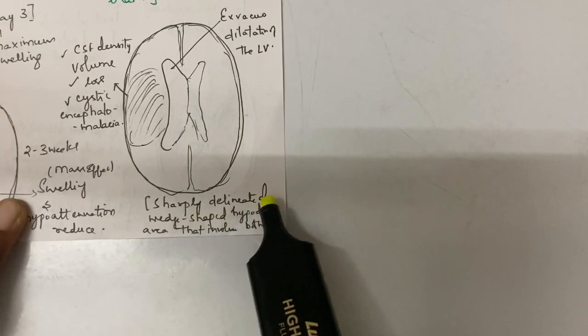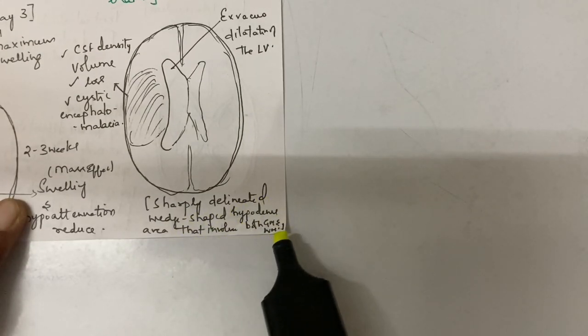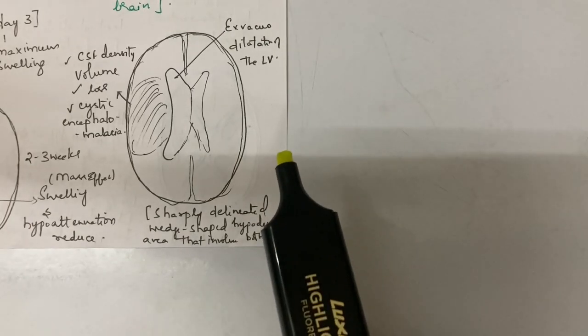There is a sharply delineated wedge-shaped hypodense area that involves both gray matter and white matter. This is about infarct.